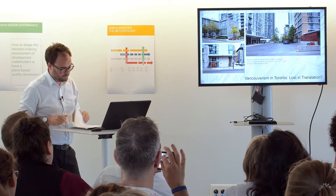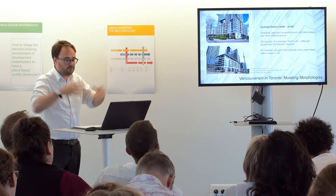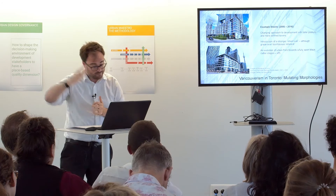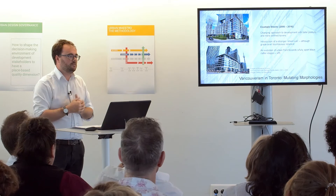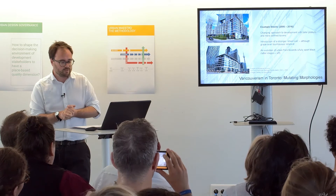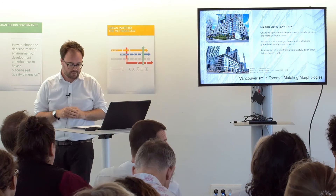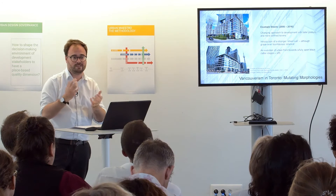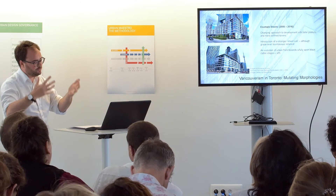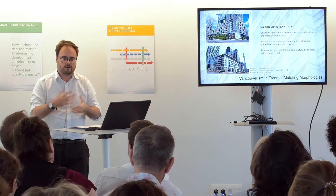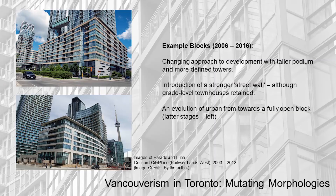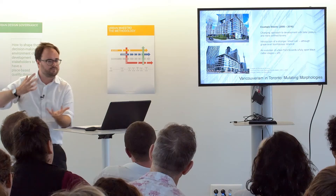Concerns about the early blocks led to a new collaborative design process — an informal process of engagement between the developer and the city. The developer didn't like the press they were getting; the city wanted to see a better project. As a result of this collaboration, they produced new guidelines. These retained a commitment to the tower-podium model but also included proposals for a stronger, taller street wall without the townhouses — a shift away from the model — and an increase in density. The built form improved a little as a result. The towers in the latter blocks are generally of higher urban design quality, but they are still taller, still bulkier, with a higher floor plate than the Vancouver precedent.